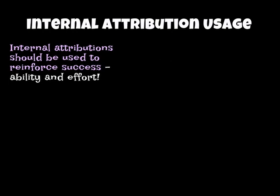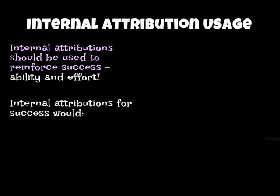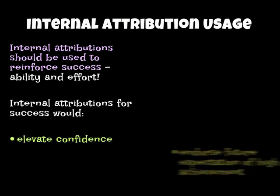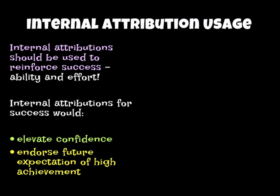Looking at internal factors from the locus of causality, we can use those to good advantage when we're actually successful. If a performer has won a championship or a game at the weekend, they should use internal factors from the Weiner model to reinforce success — for example, 'I won because my ability was far better,' or 'I won because my effort was much greater than anybody else's.' This increases confidence as a sports performer and also endorses future expectations of high achievement.